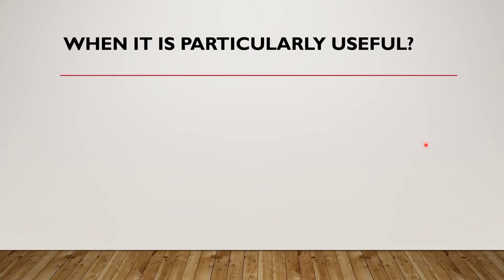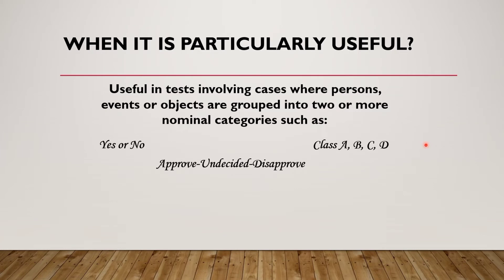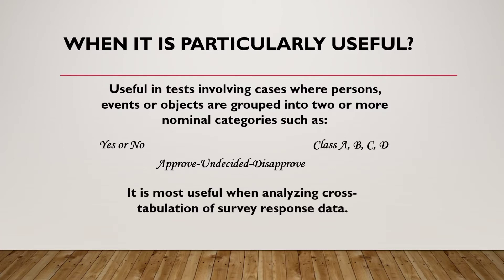When is chi-square particularly useful? It is useful in tests involving cases where persons, events, or objects are grouped into two or more nominal categories — such as yes or no, class A, B, C, D — or approved, undecided, or disapproved. It is most useful when analyzing cross-tabulation of survey response data.